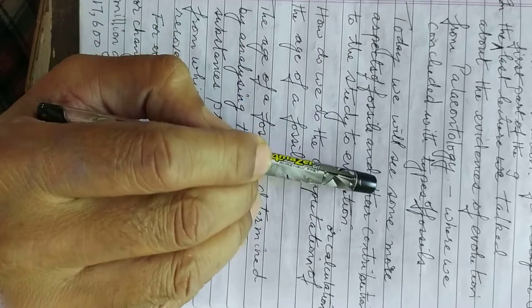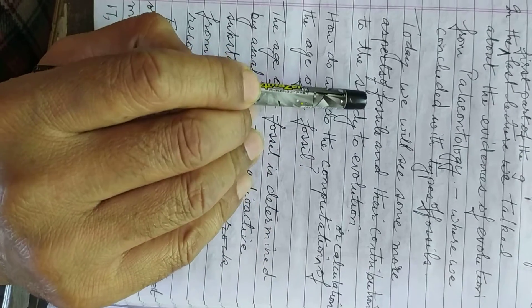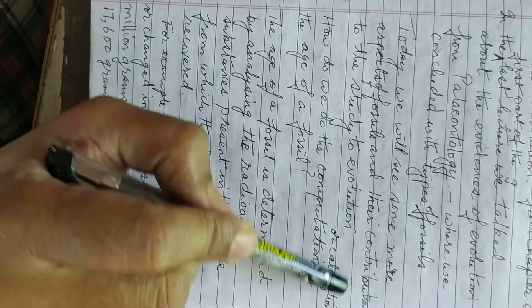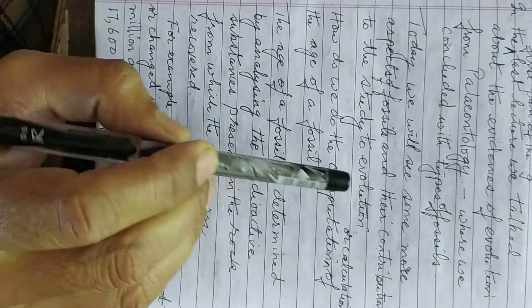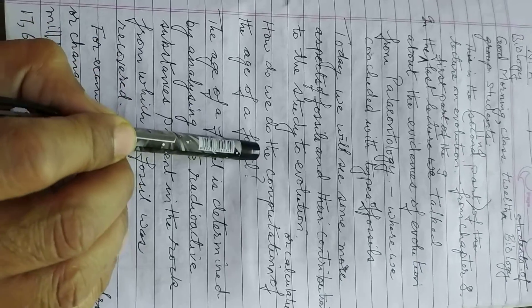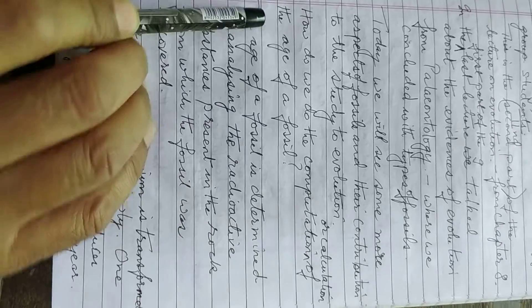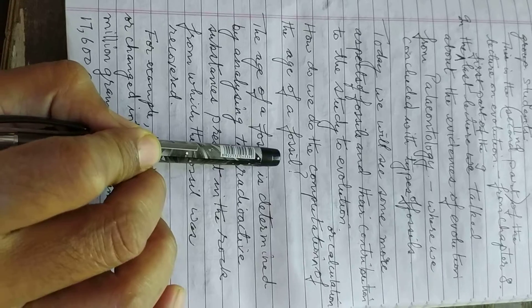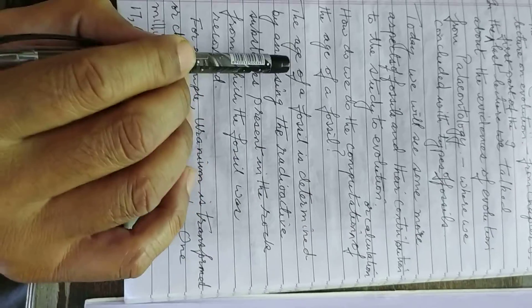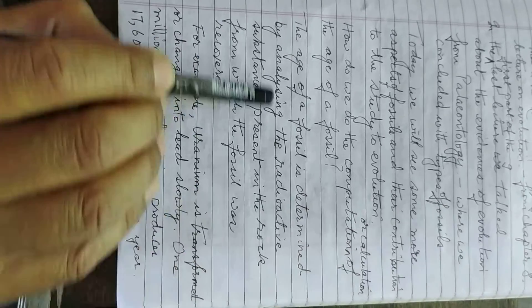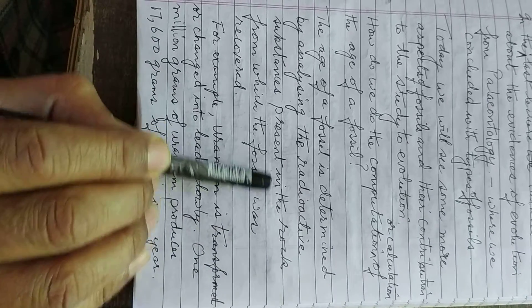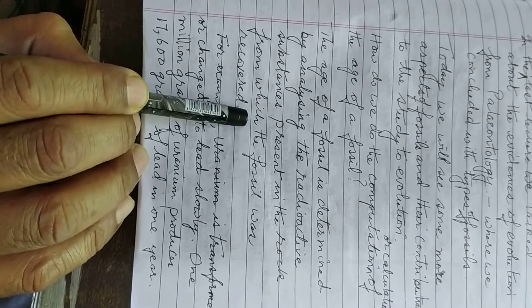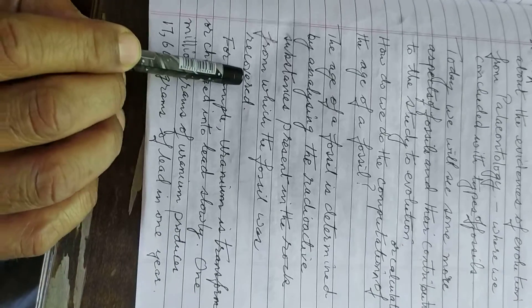Today, we will see some more aspects of fossils and their contribution to the study of evolution. How do we do the computation or calculation of the age of a fossil? The age of a fossil is determined by analyzing the radioactive substances present in the rock from which the fossil was recovered.